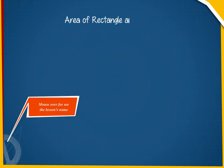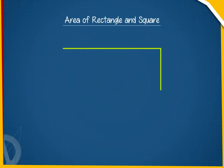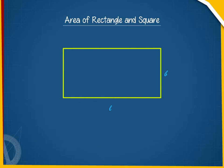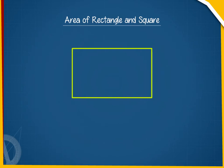Area of Rectangle and Square. Let us now understand how to calculate the area of a rectangle if the length and breadth are known. When we multiply the length and breadth of a rectangle, we get its area. Area of rectangle is equal to length into breadth, which is equal to L into B.